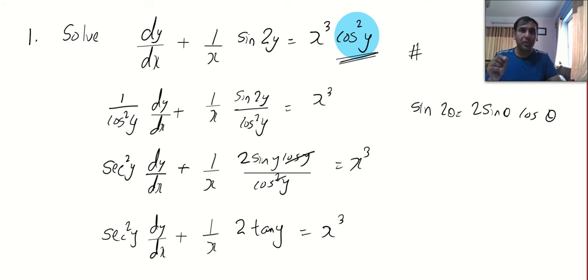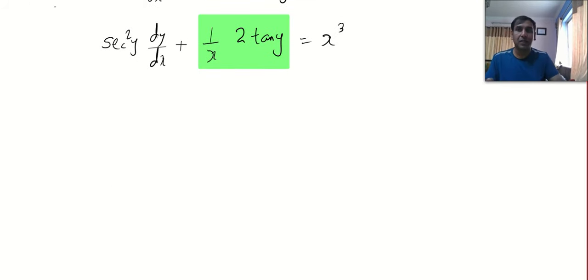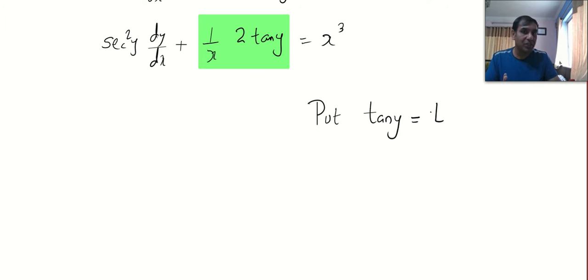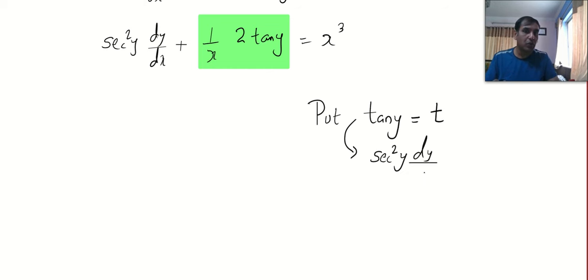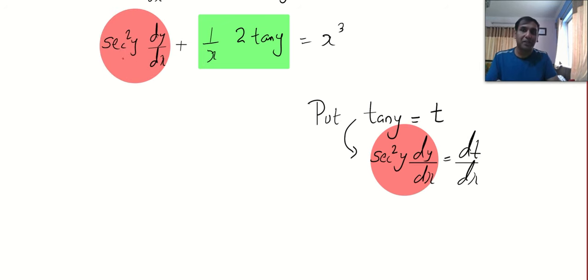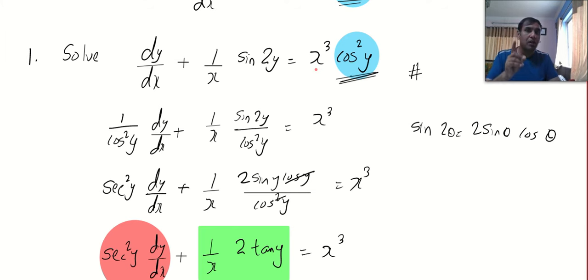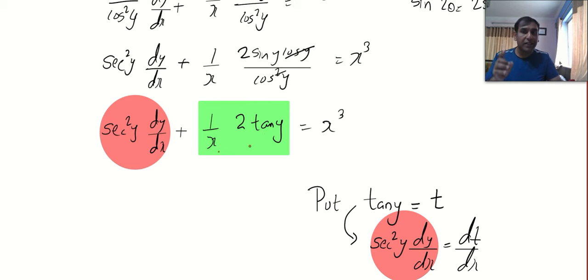Now focus on the second term on the left-hand side. In every Bernoulli problem, all you have to do is identify the function in y in that second term — here it is tan y. Equate that function to some letter; I'm going to use t, so let t = tan y. Now find its derivative: the derivative of tan y with respect to x is sec²y·dy/dx = dt/dx. Notice that this is exactly the same quantity as the first term.